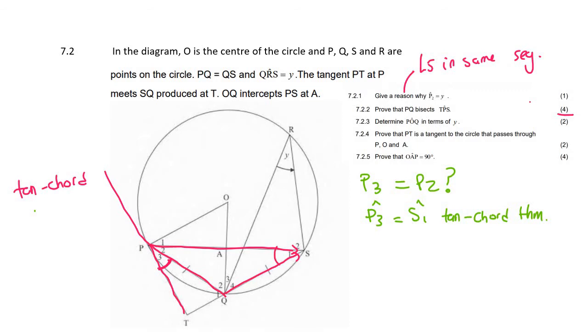We now know that these two are the same. But now, they've told us that these two lines are the same. Now there is a theorem that tells us in Euclidean circle geometry that when two chords are the same length, the angles that they make are also the same.